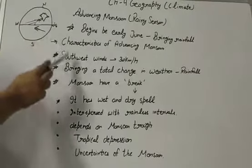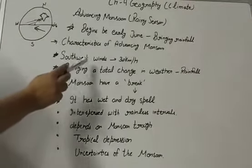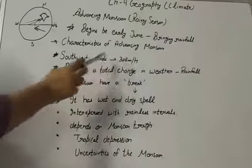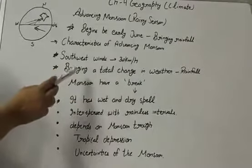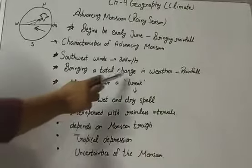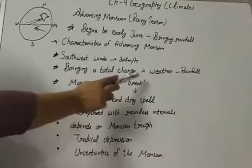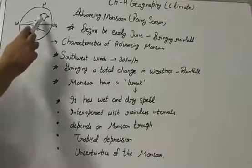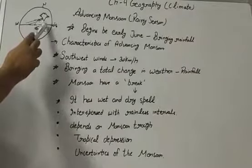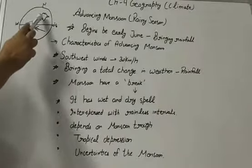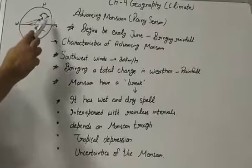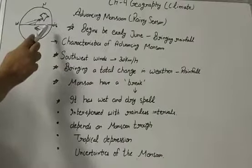These winds are strong and blow at an average velocity of 30 km per hour. The inflow of the south-west monsoon in India brings about a total change in the weather. Early in the season, the windward sides of the Western Ghats receive very heavy rainfall, more than 250 cm.